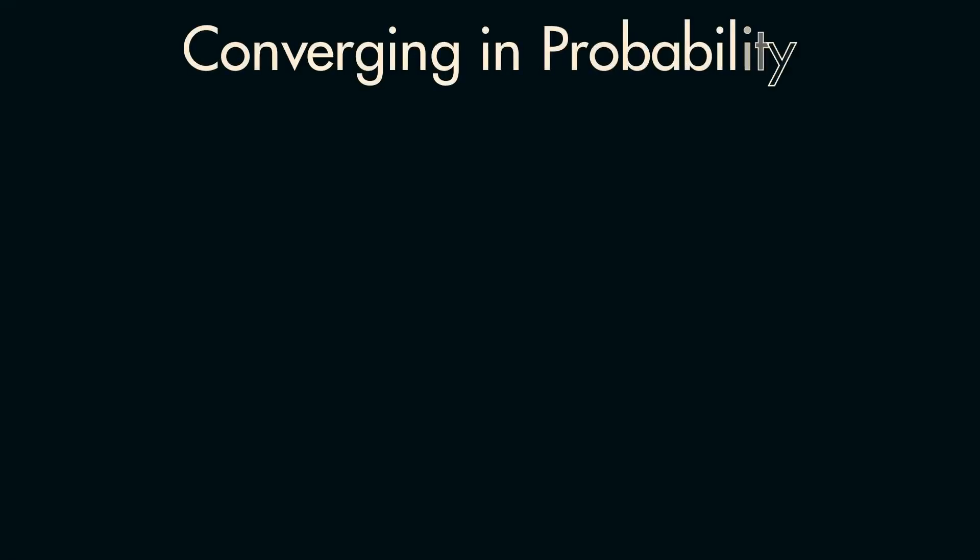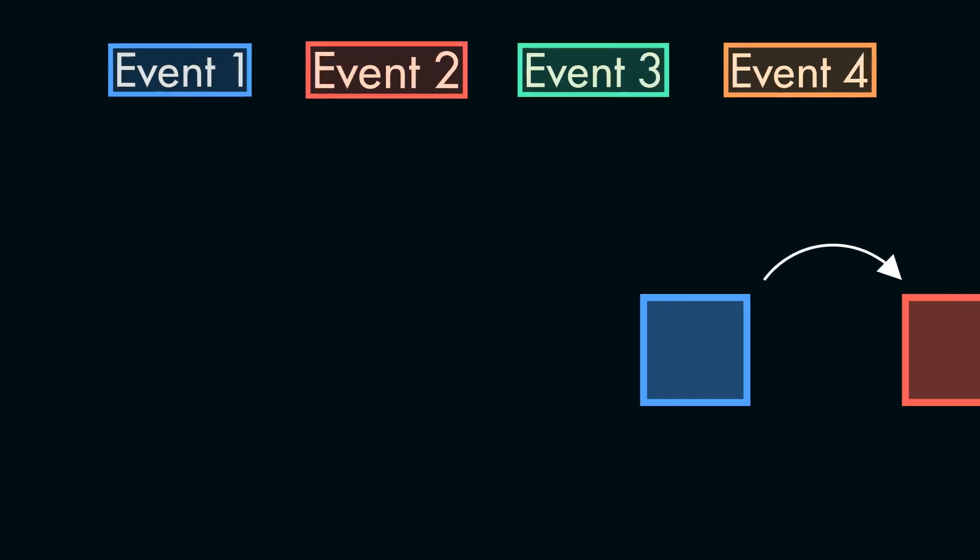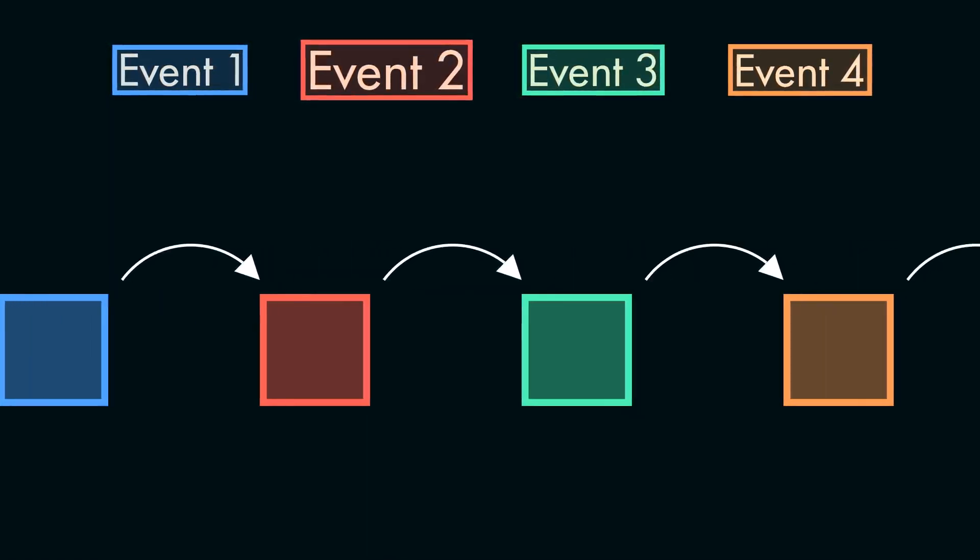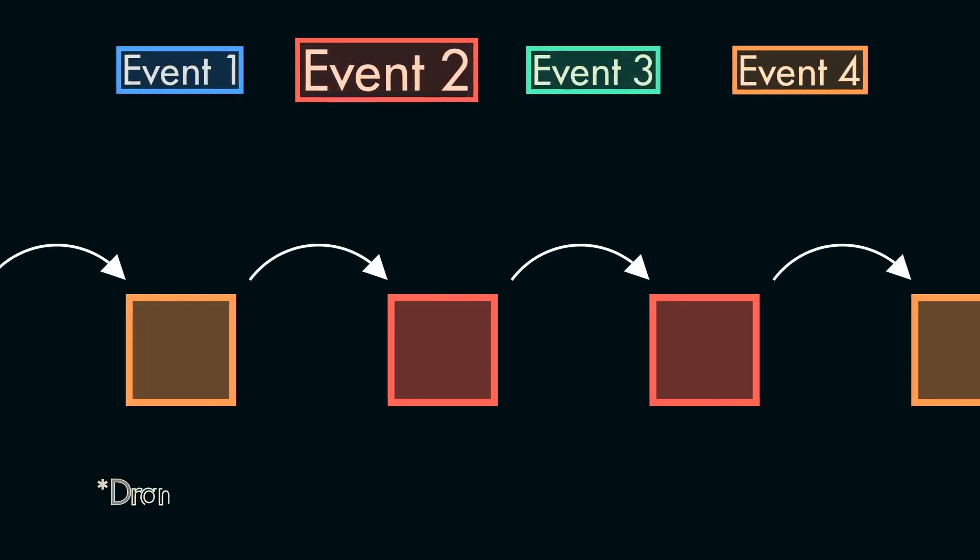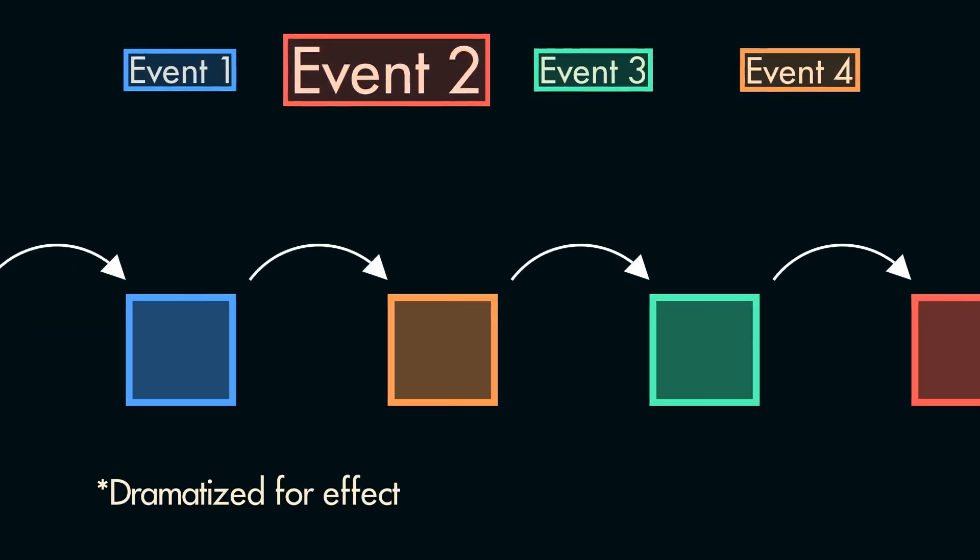We'll see this notion of converging probability a lot in statistics, so what does it actually mean? In short, it means that as a sequence of events progresses, a certain outcome becomes more and more likely. On the flip side, it means that abnormal events become less likely to occur.